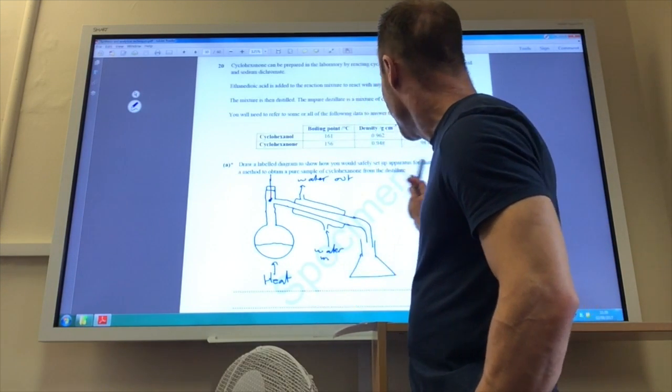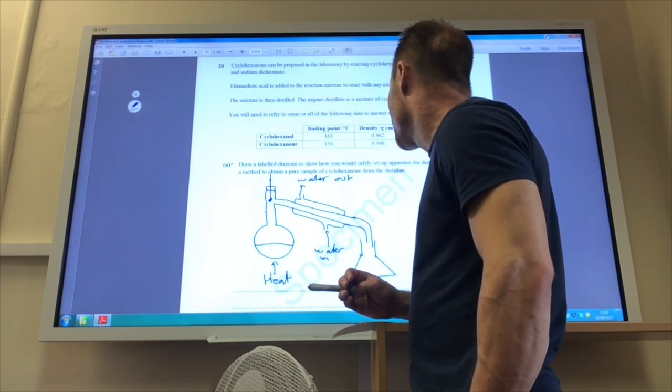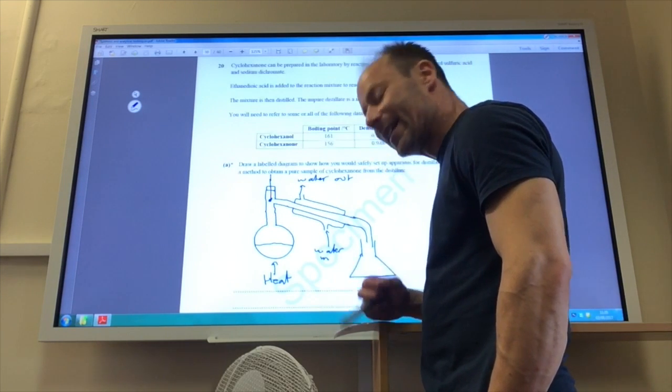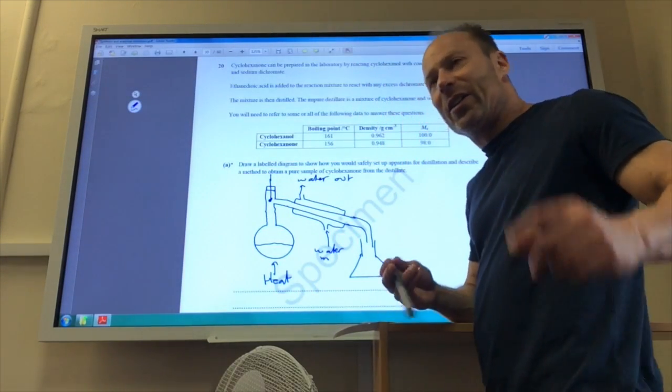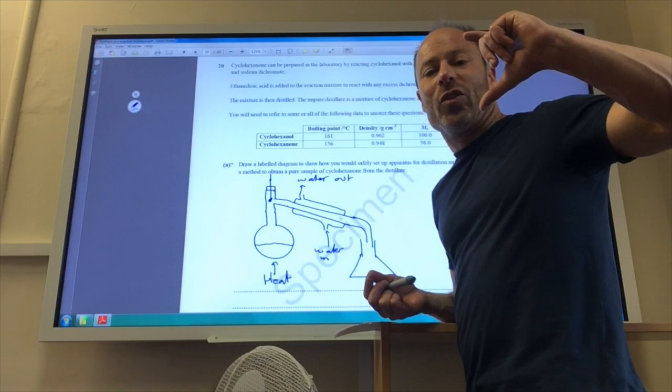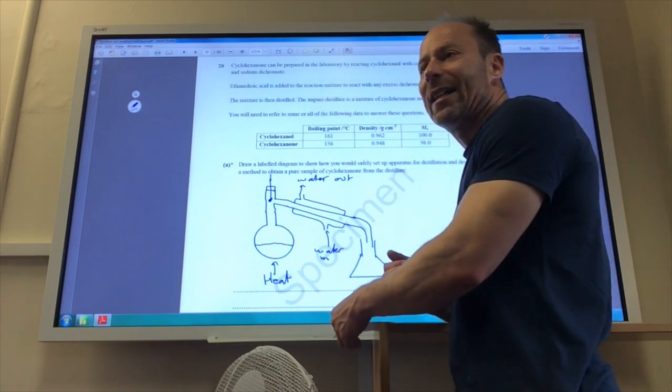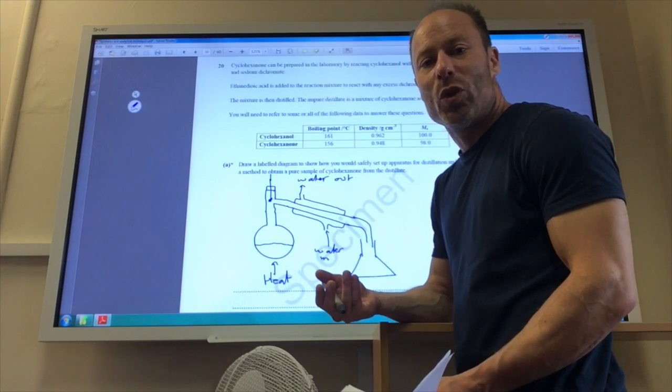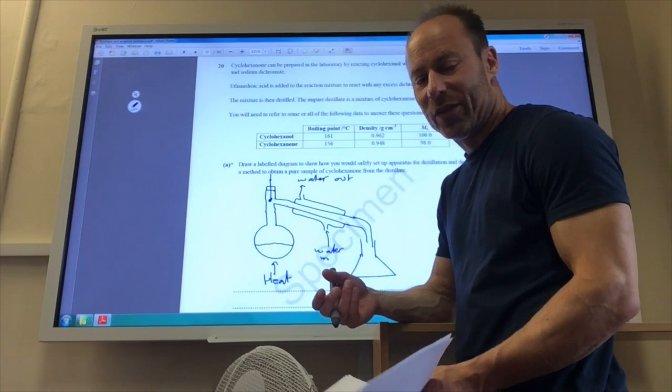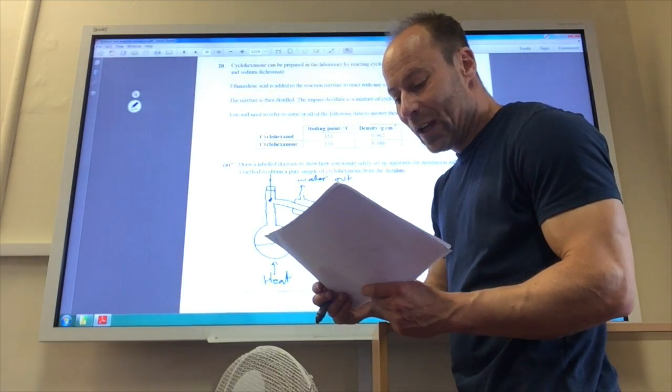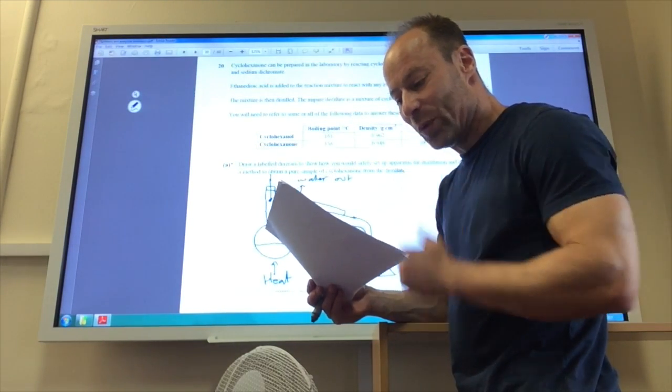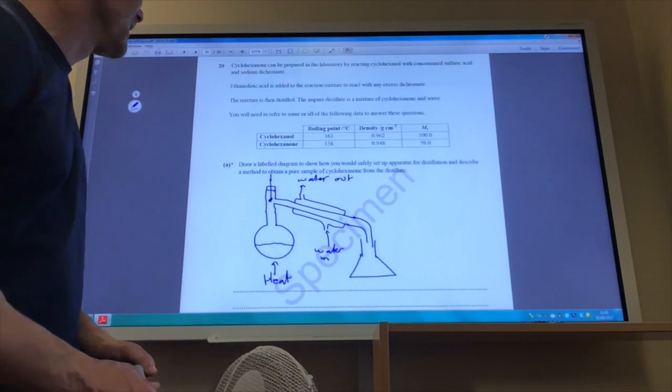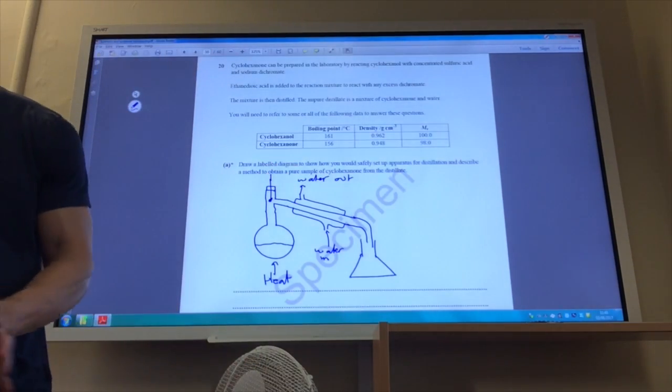Once you've collected this, it tells you it is a mixture of both water and cyclohexanone. Therefore you would put it in a separating funnel to separate those two immiscible layers. Then you would add anhydrous magnesium sulphate which would remove all the water, filter off the magnesium sulphate, and you're left with pure cyclohexanone hopefully. Then you would re-distill the organic layer and collect the fraction distilling at the boiling point of cyclohexanone which is 156 degrees C.